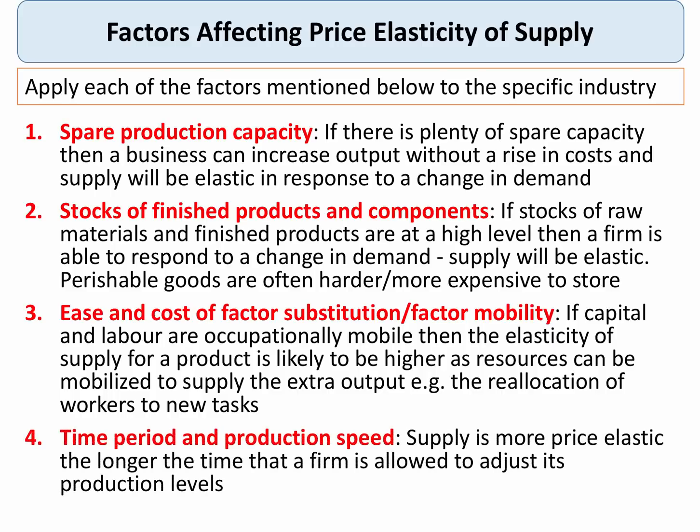The fourth factor is the time period and the production speed. Supply is more elastic the longer the time period a firm is given to adjust its production levels. In some agricultural markets we talk about the momentary period, which is a short time period when supply can't be changed. So these are the four main factors that determine the price elasticity of supply.